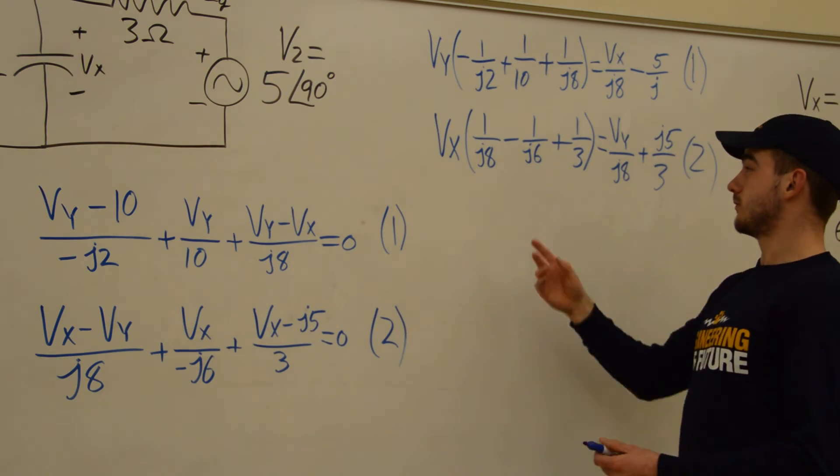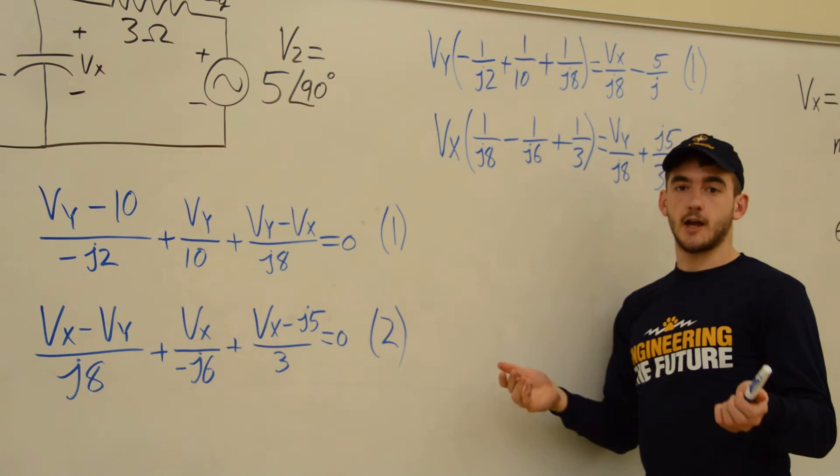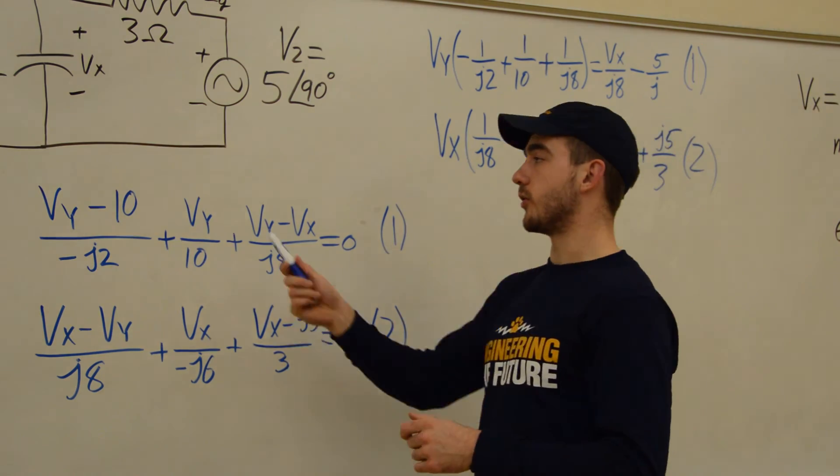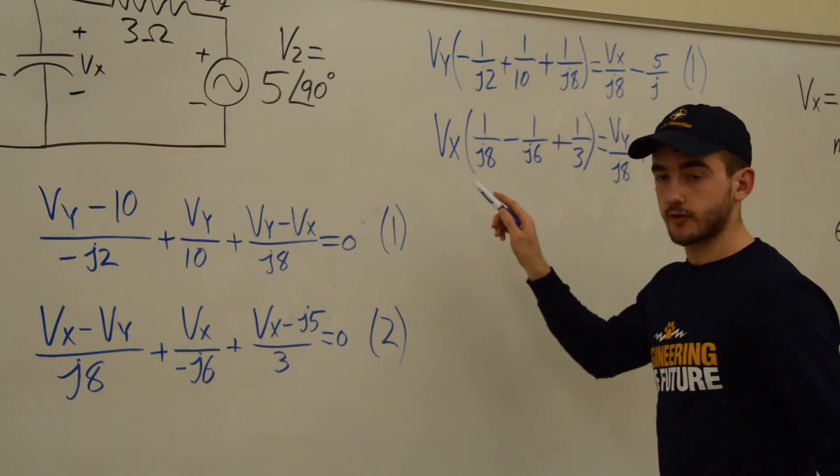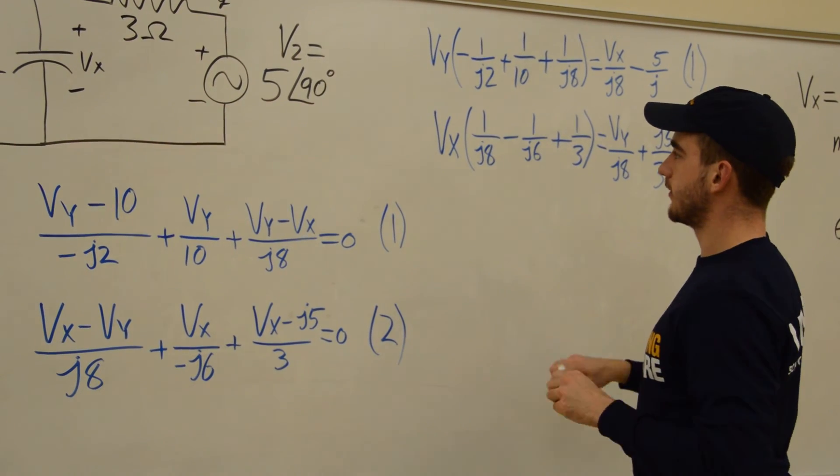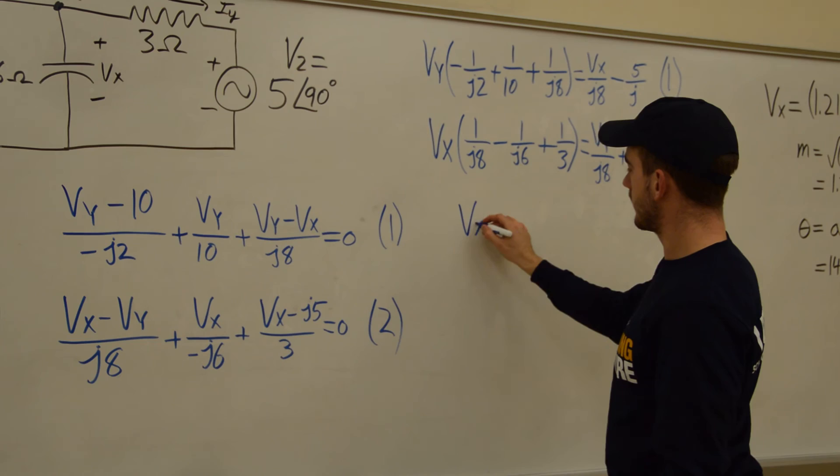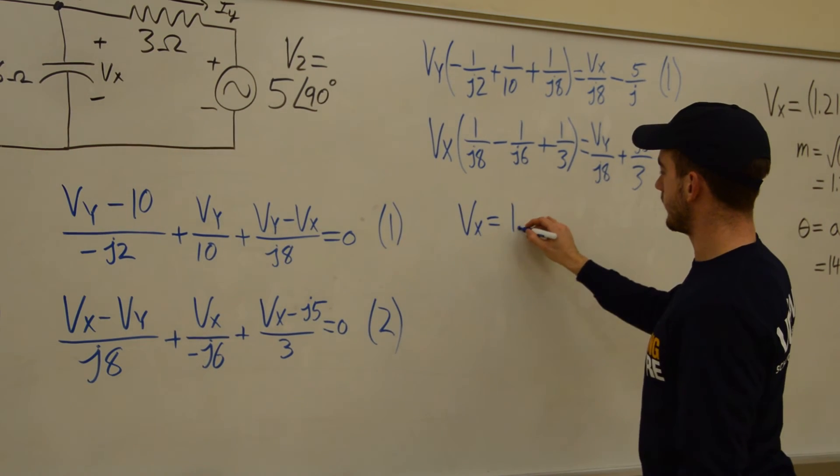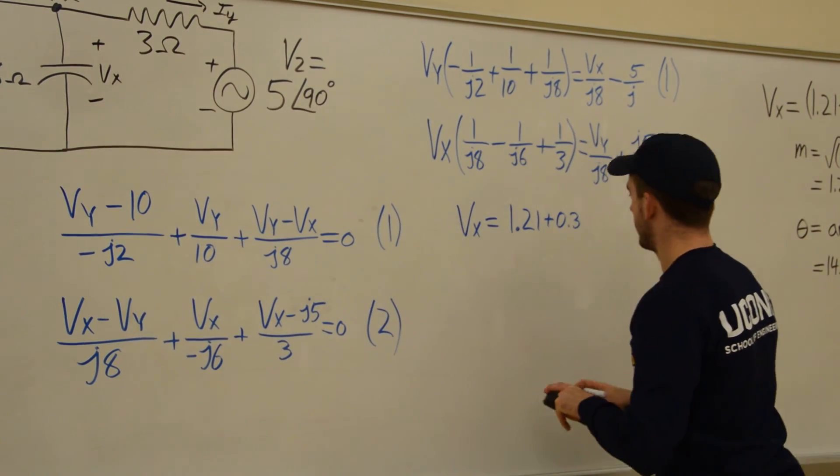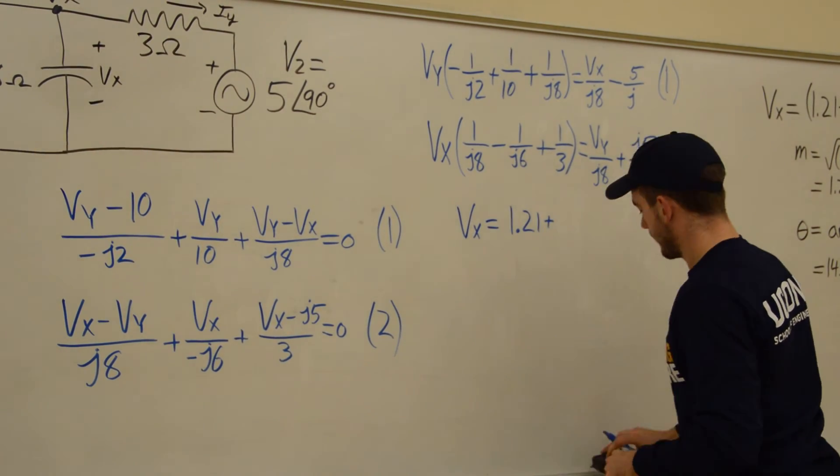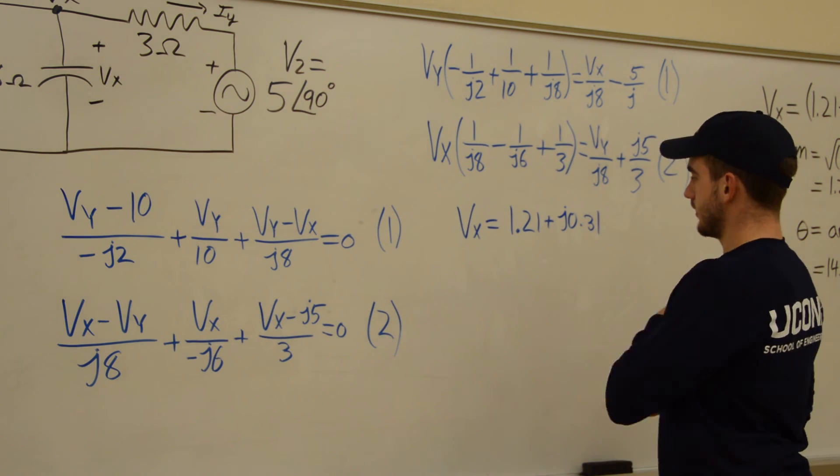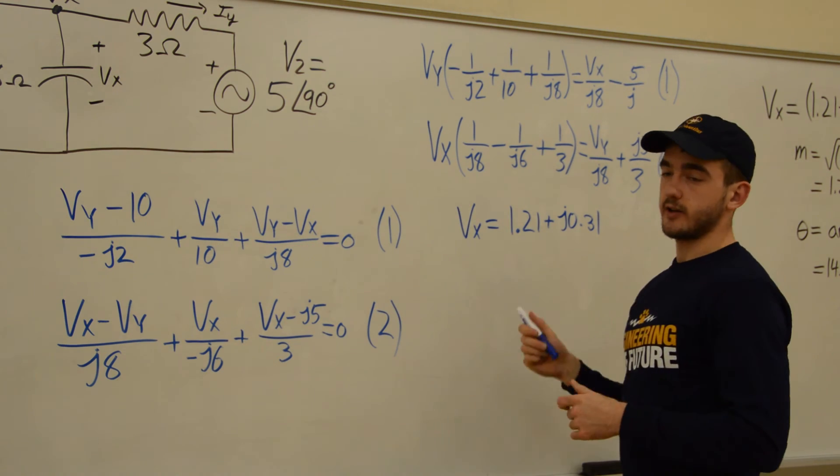So like I said, we're not going to go through and solve these. We have the answer, though. So after you go through and solve this, remember the initial goal was to solve for Vx right here, which is the same Vx that's right here. So once you plug and chug a little bit, what you end up with is Vx equals 1.21 plus 0.3, oop, I broke my own rule. Sorry. Plus J times 0.31. So that's Vx in rectangular form.